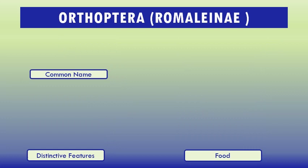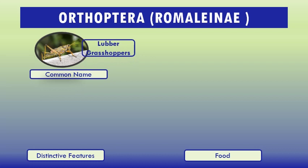Subfamily Romaleinae, common name Lubber grasshoppers. Lubber grasshoppers are one of the largest and slowest moving grasshoppers. The name 'lubber' is derived from the heavy-bodied appearance and clumsy behavior of these insects. They can be up to 3 inches in length. They are distinguished in part by having a spine on both the inner and outer surface at the tip of the hind tibia.